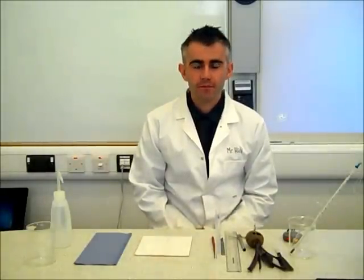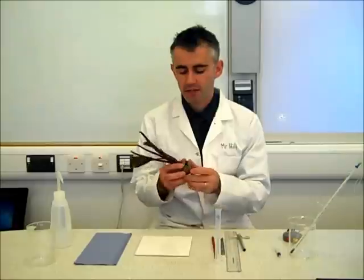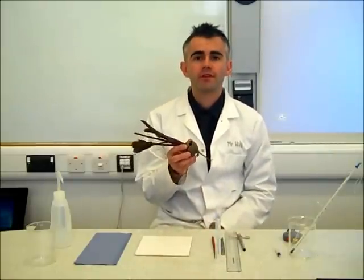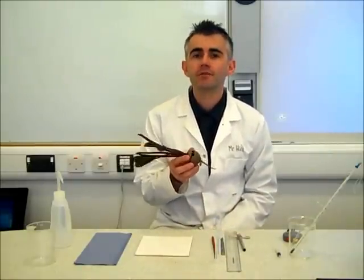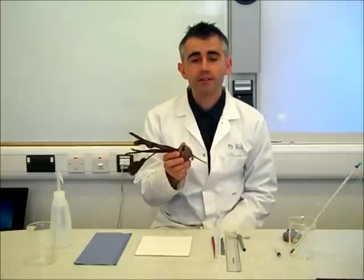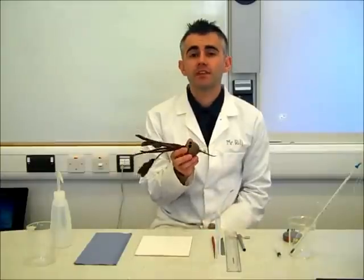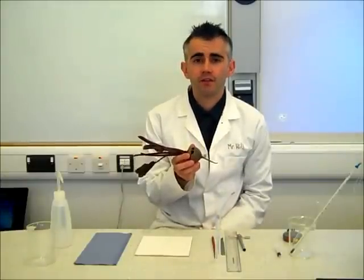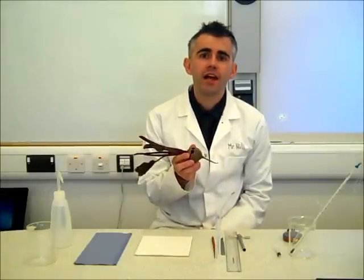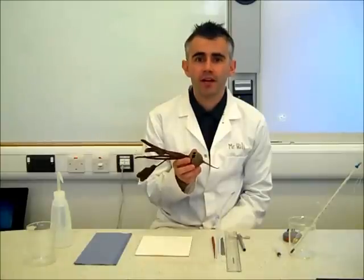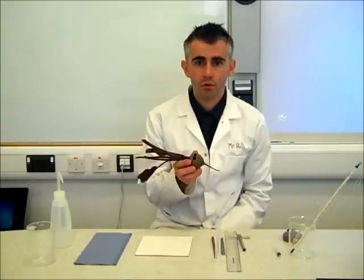Hello and welcome to my podcast on Core Practical 3 from Unit 1. This is investigating the effect of temperature on the permeability of cell membranes. For this investigation we're going to use a beetroot because it has a very distinctive red pigment inside the cells. We're going to take a section of the beetroot, place it into some distilled water, and observe the pigment diffuse out of the cells, across the cell membrane and into the water.